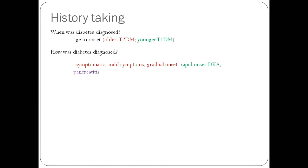Second question: how was diabetes diagnosed? Was it asymptomatic, just tested for some reason and found to have high blood glucose? Was he just having mild symptoms with gradual onset? Or was it a rapid onset, there was a sudden explosion of osmotic symptoms and weight loss, less than six weeks? Or was it during a DKA episode? Or was it after an episode of pancreatitis? This will tell you whether it is type 2 diabetes or type 1 diabetes or pancreatic diabetes.